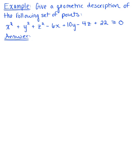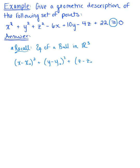Looking at this given inequality, the fact that we have an inequality is telling us something about the geometric description. I want you to recall that we know the equation of a ball in R3. The equation of a ball in three dimensions would be (x minus x naught) squared plus (y minus y naught) squared plus (z minus z naught) squared is less than or equal to r squared.